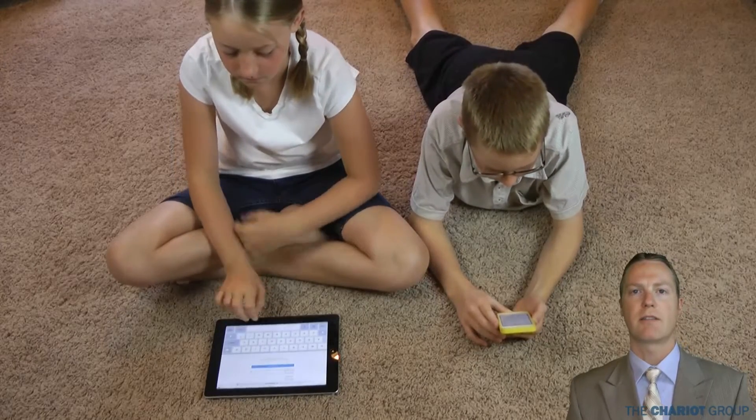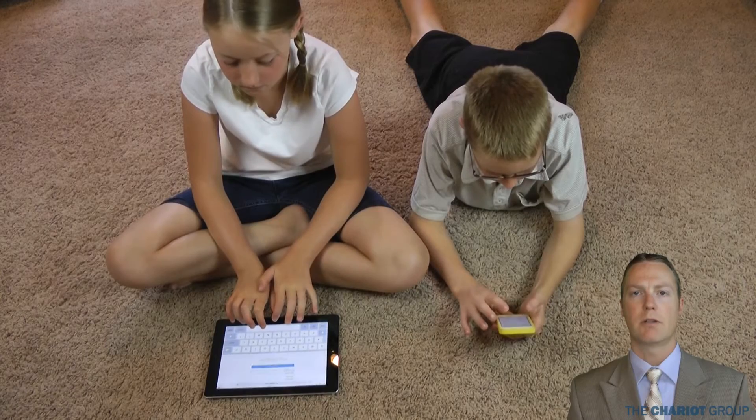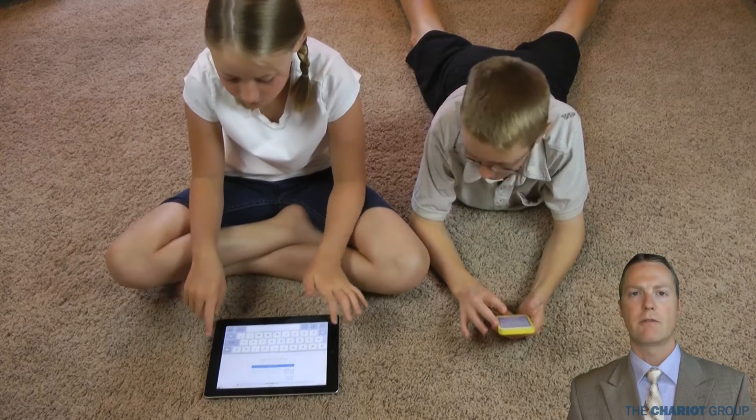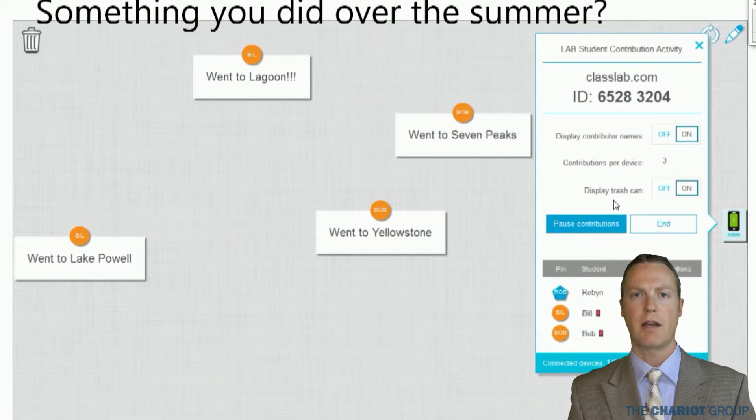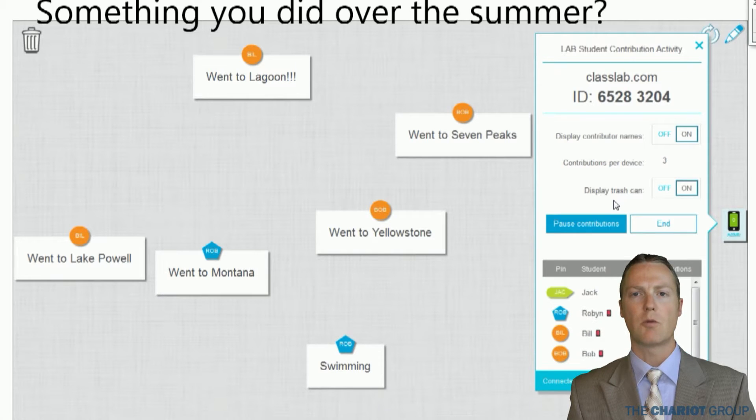This is the first activity in the Lesson Activity Builder that is mobile-enabled, which means students will use a device to interact with the activity. Students use a web browser on their mobile devices, laptops, or desktop computers to connect to an activity and contribute words or images.